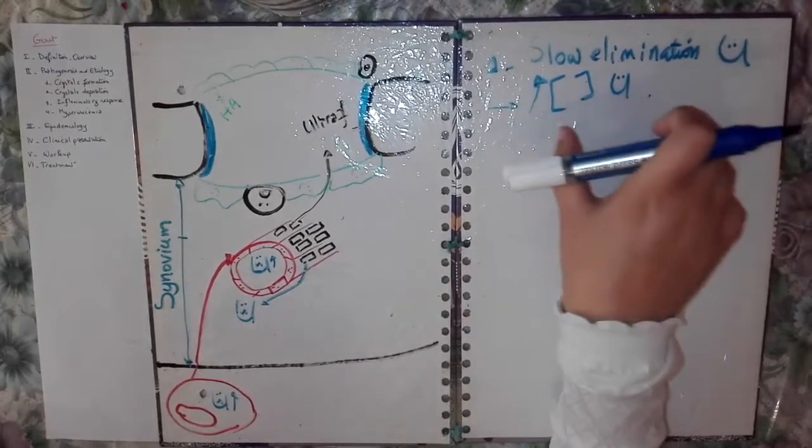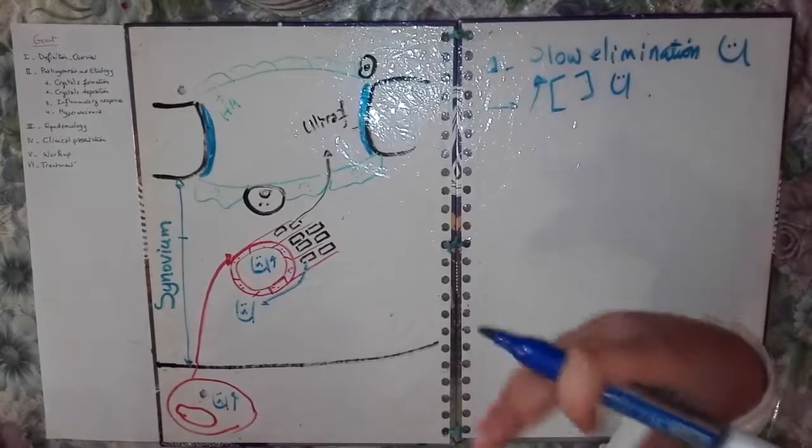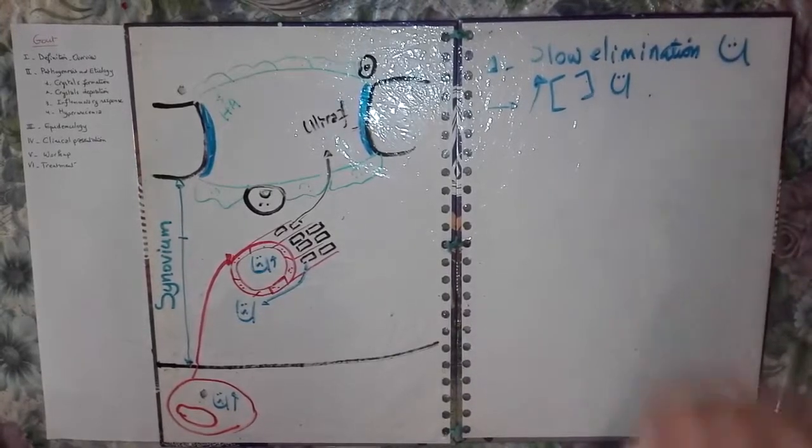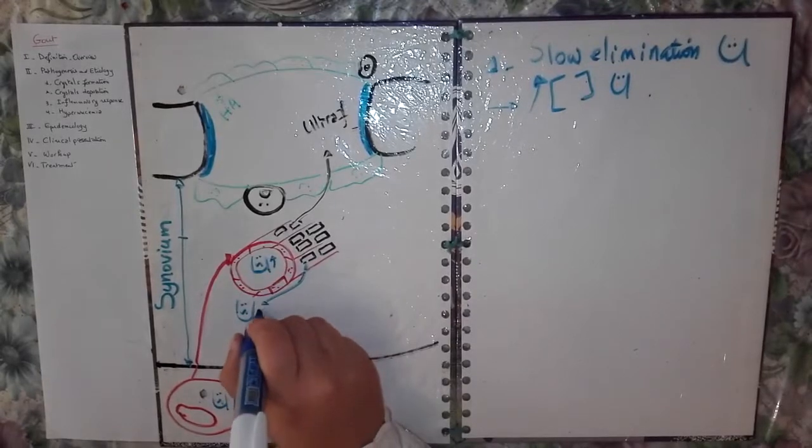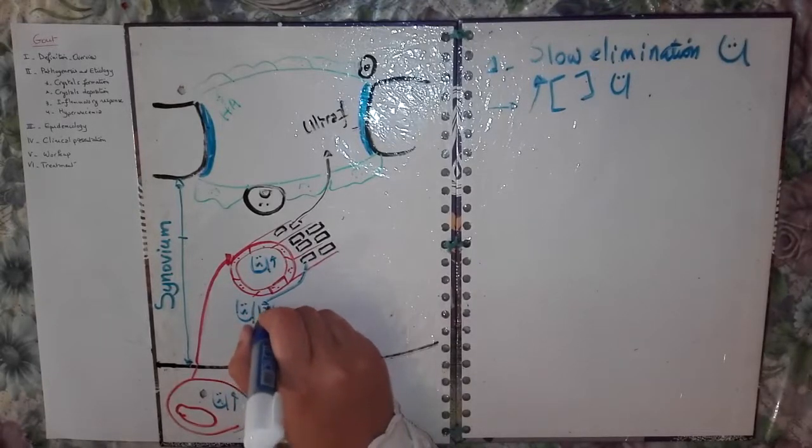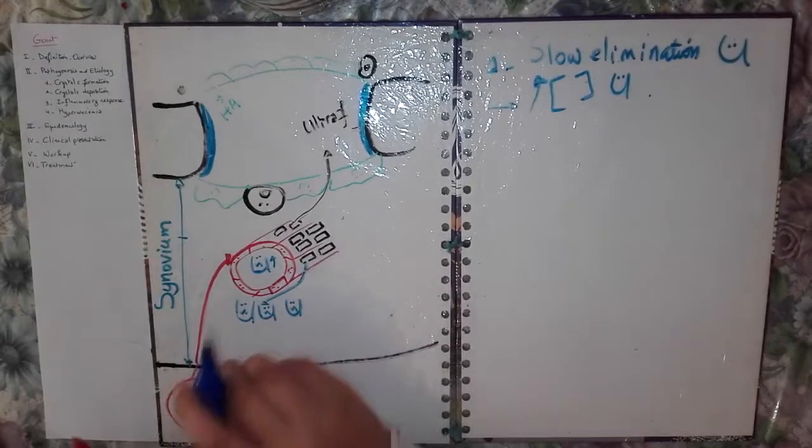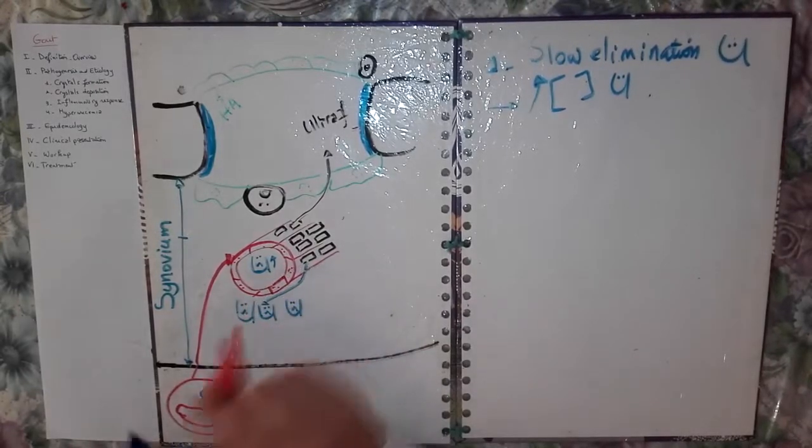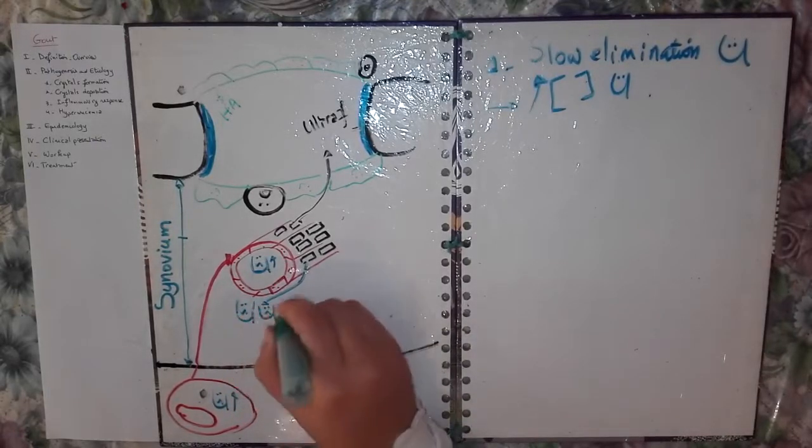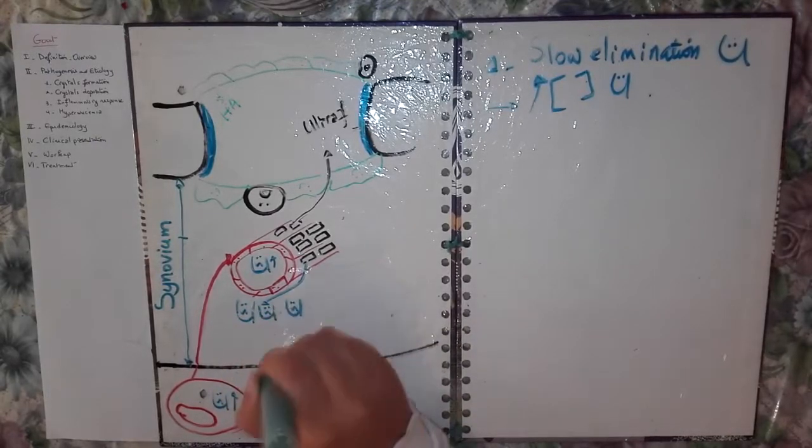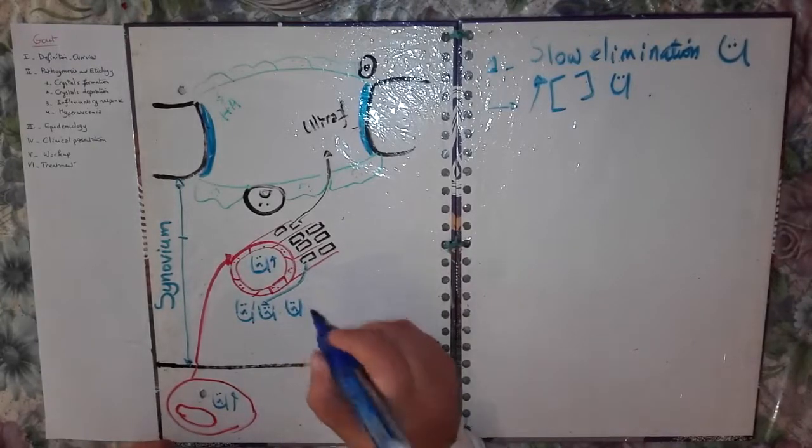And, this supersaturation is going to initiate the nucleation of MSU crystals. So, here. A build-up of uric acid. Build-up of MSU molecules. Which are going to have a party within the synovium. Join hands. And, form crystals.